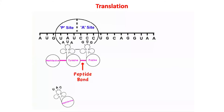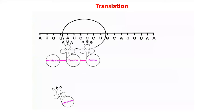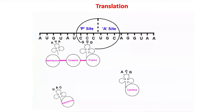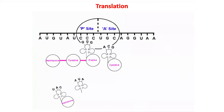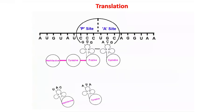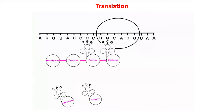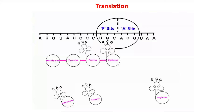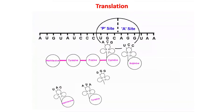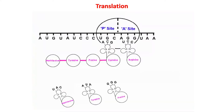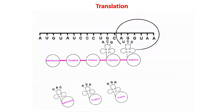A peptide bond joins the new amino acid to the existing chain, and this process continues. The ribosome always moves down by one codon, freeing the previous A site and allowing a new tRNA with a new amino acid to join. The freed tRNA returns to the cytoplasm to collect another specific amino acid. The amino acids used are defined by the codons on the mRNA and complementary anticodons on the tRNA. This continues until the ribosome encounters a stop codon.